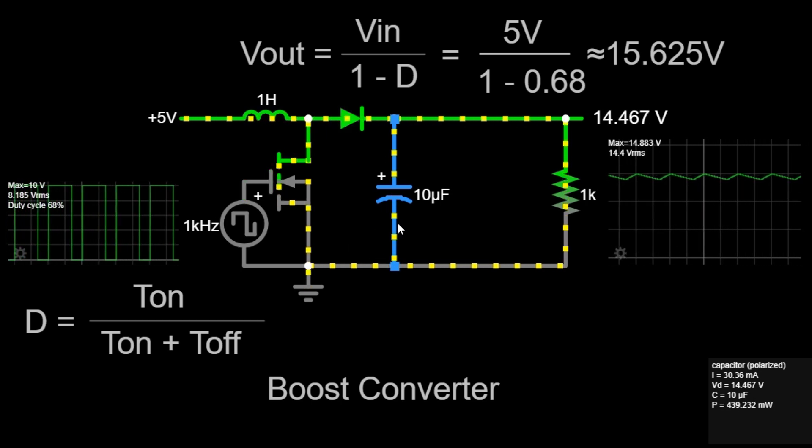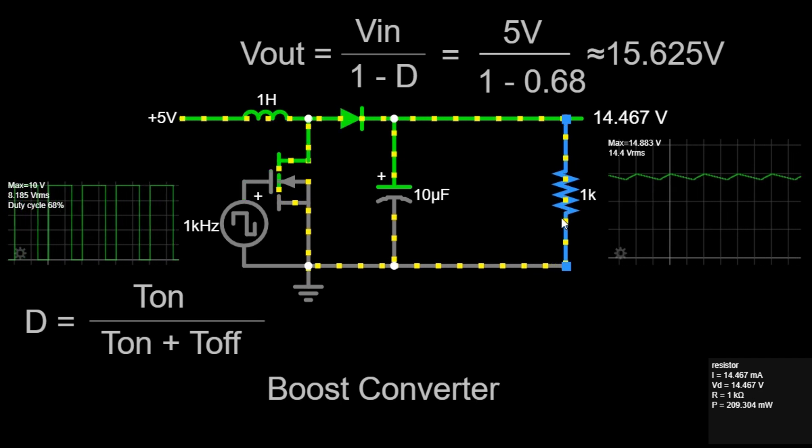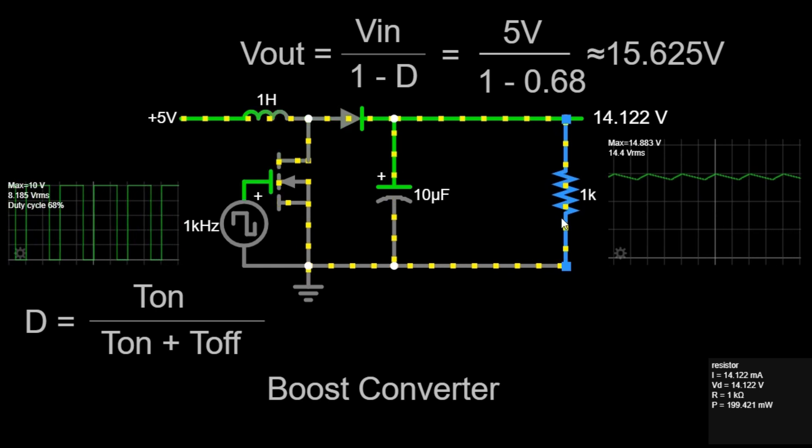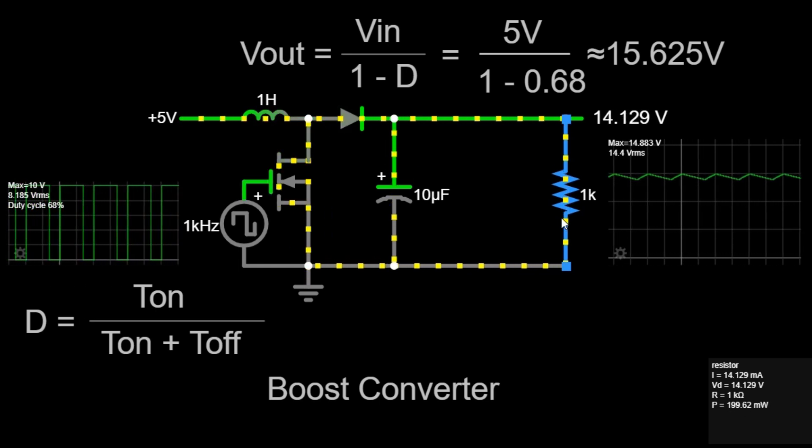Finally, we have the load resistor, with a value of 1 kΩ. This represents the load to which the boosted voltage is applied. The load resistor simulates the actual device or circuit that will use the boosted voltage from the converter.